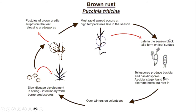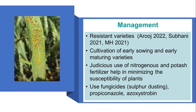Black telia form on the lower surface of leaves. These telia spores produce basidia spores. The aecial stage is found on the alternate host, which is rare in Pakistan. For management, use resistant varieties. For yellow rust resistance: Arouj 22, Wahami, MH, and Dilkash varieties are recommended.